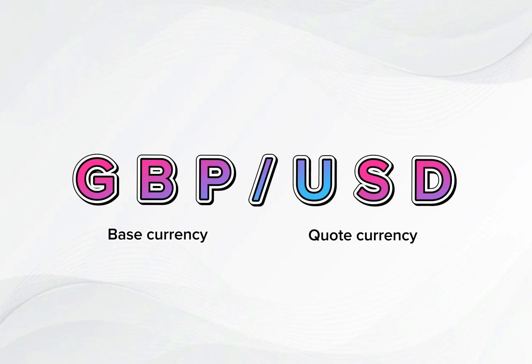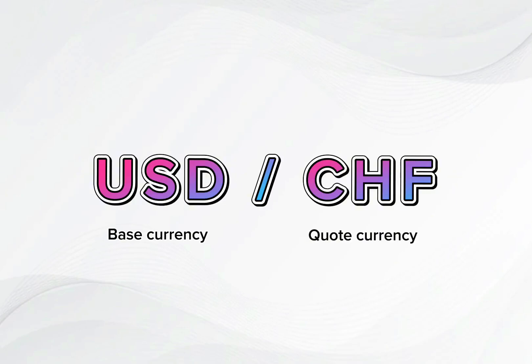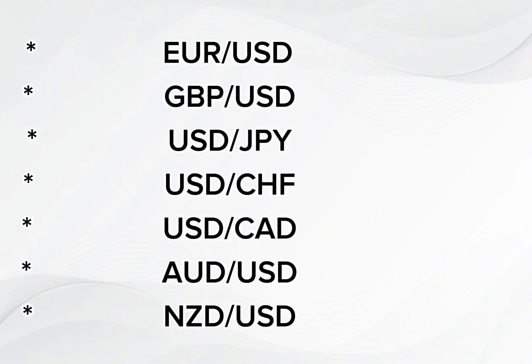Either the USD is against or the base currency, or it is the quote currency. For example: EURUSD, GBPUSD, USDJPY, USDCHF, USDCAD, AUDUSD, NZDUSD. All these are major currency pairs because they have the US dollar in them and are the most traded pairs in the world. Majors are the most convenient pairs to trade, not only for beginners but also for experienced traders.